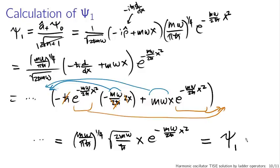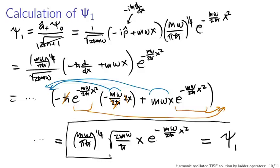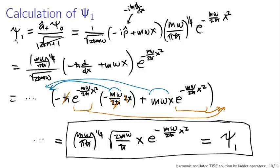This is your expression for ψ₁. The algebra gets a little complicated, but fundamentally what we're doing is calculus — taking derivatives, multiplying and manipulating functions, applying the chain rule. The formula gives us machinery to calculate any wave function as a solution to the time-independent Schrödinger equation for the quantum harmonic oscillator.